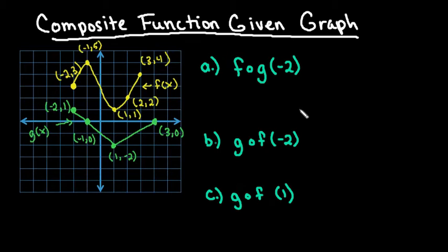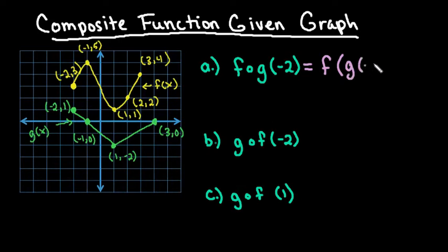Hi, for this video what I wanted to do is show you how to find a composite function when you're given a graph. The first one we're going to find is f of g of negative 2. What this is saying is that we're going to look at the part inside. Remember that f of g of negative 2 can also be written as f of g of negative 2, and we're going to find g of negative 2 on our graph and look at the output of that.